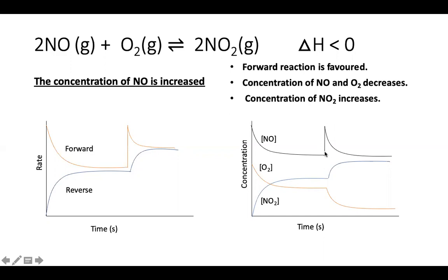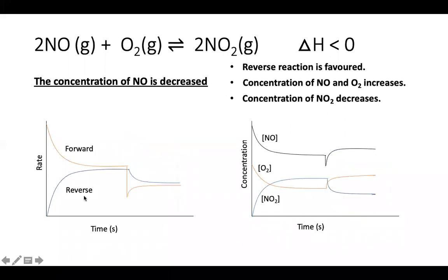The next disturbance: the concentration of NO is decreased. According to Le Chatelier's principle, the system wants to make more NO, so the reverse reaction is favoured.